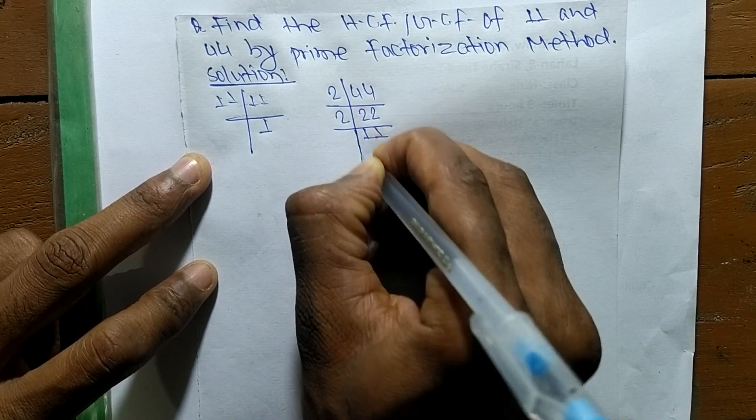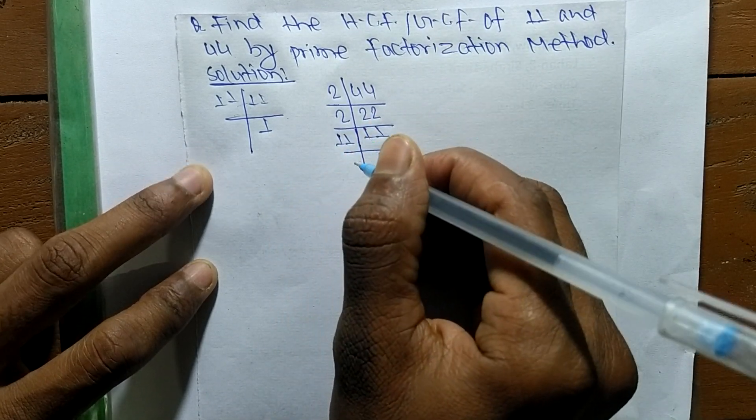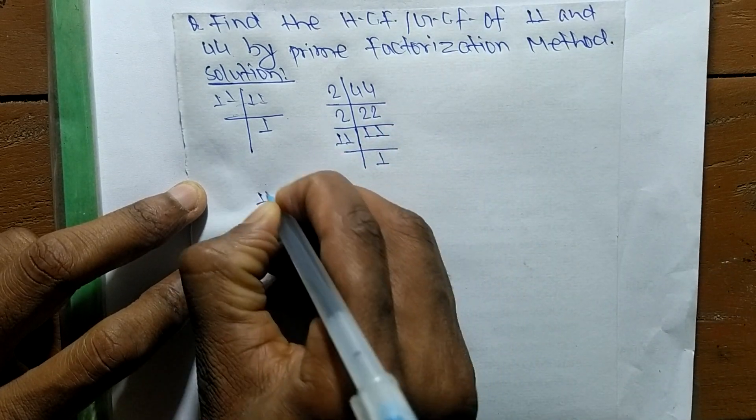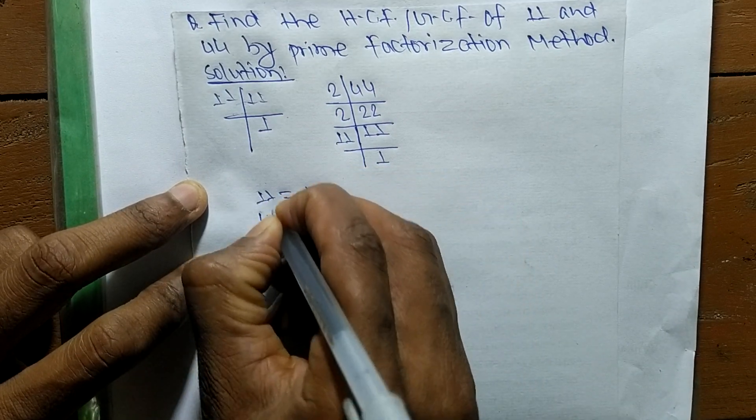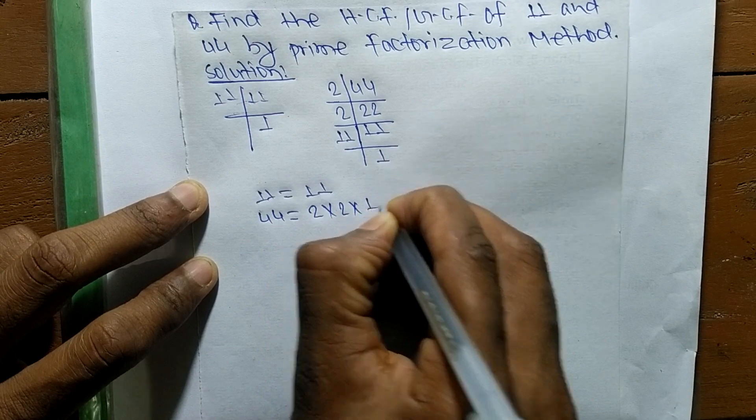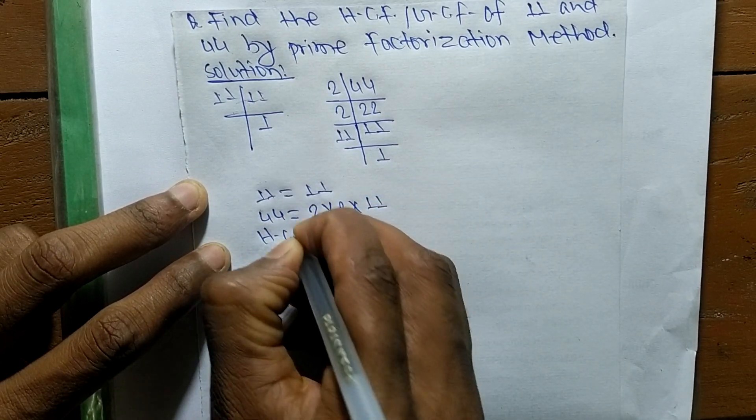From these prime factors, we can write 11 equals 11 and 44 equals 2 times 2 times 11. So its HCF is...